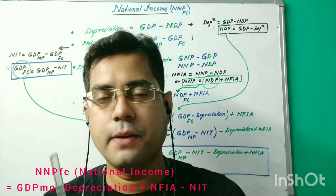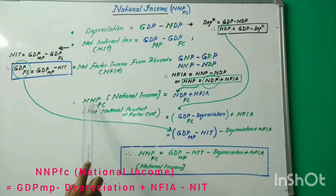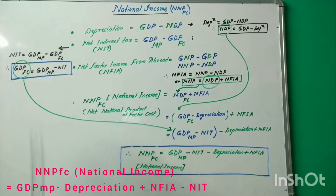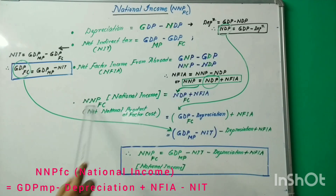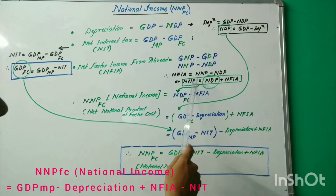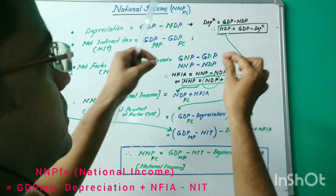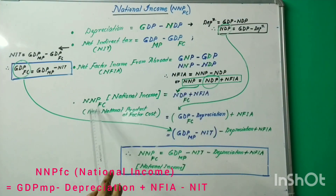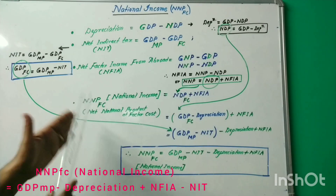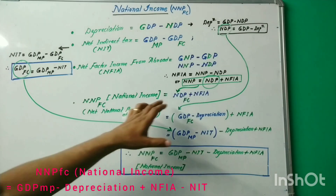Now we will calculate national income NNPFC using these three formulas. NNPFC is national income. We need to write NNP. Using the NFI formula: NFI equals NNP minus NDP, so NNP equals NDP plus NFI. In place of NNP, we substitute this formula. We get NDP plus NFI. Keeping factor cost constant, we can write national income as NNPFC equals NDPFC plus NFI. This is one formula for national income.